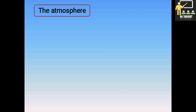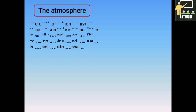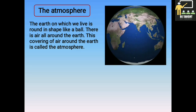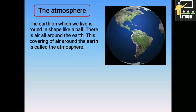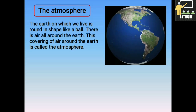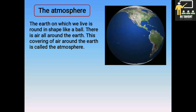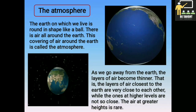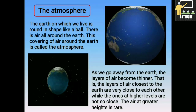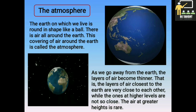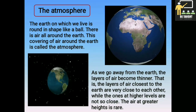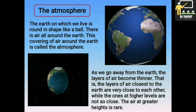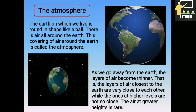Now we shall learn about the atmosphere. The earth on which we live is round in shape like a ball, as you can see in the picture. There is air all around the earth. This covering of air around the earth is called the atmosphere. As we go away from the earth, the layers of air become thinner. That is, the layers of air closest to the earth are very close to each other, while the ones at higher levels are not so close. The air at greater heights is rare.